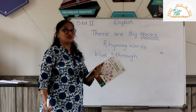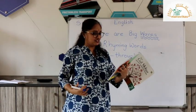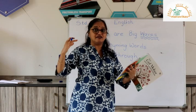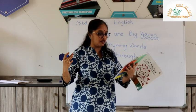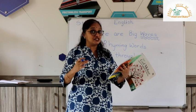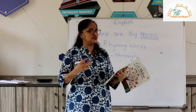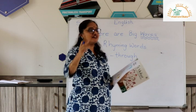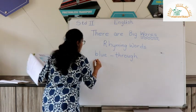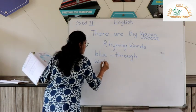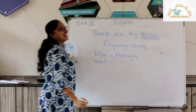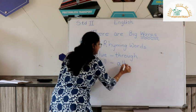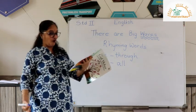Now let's go to the next four lines. Waves that rise up like a great water wall. Waves that swell softly and don't break at all. Yes, what is the rhyming word for wall? We have wall - and yes, it's all. Wall and all.